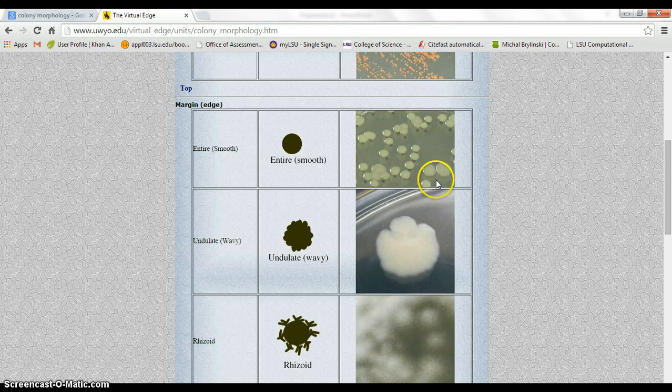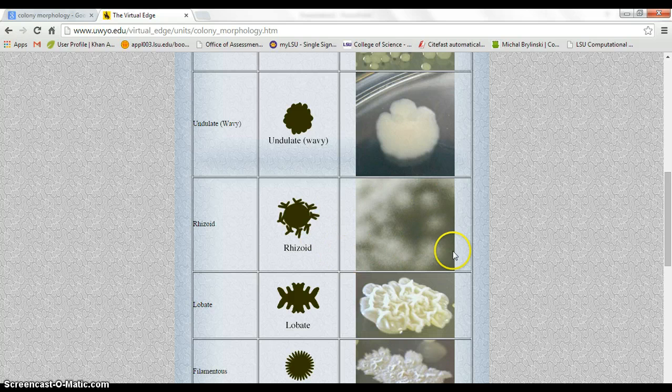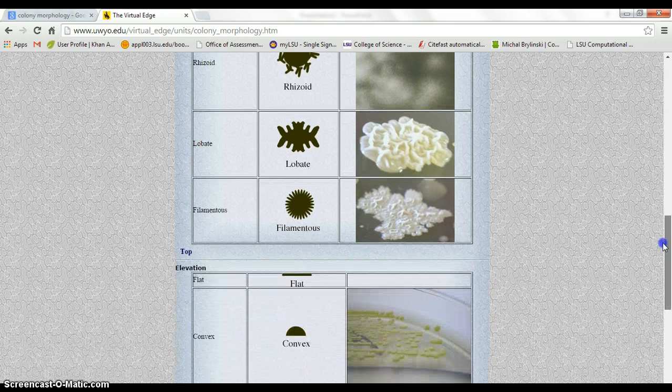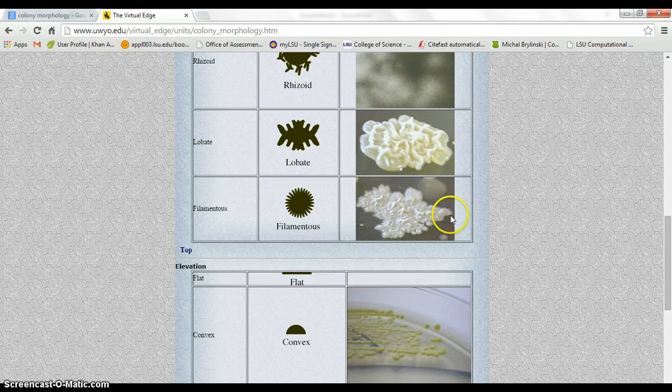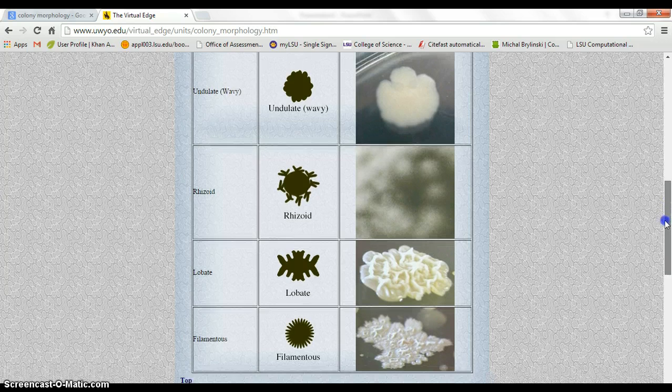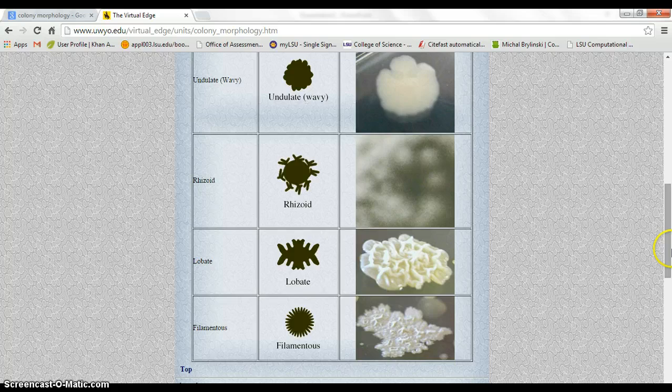Okay, alright, so this one is a smooth thing. Undulate, this is kind of a bad picture. I don't really know why that's here. Lobate, I don't think you need to know that one but I might be wrong, I forgot. Filamentous, again, this is just hard to tell right here. Like, if I were to see this I would think just kind of wavy or irregular or something, I don't know.